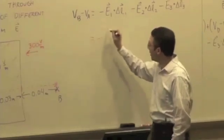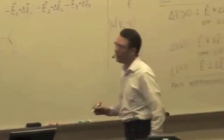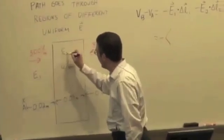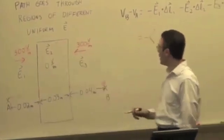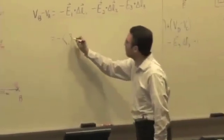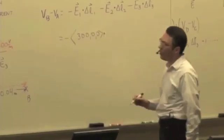So negative. How would I write E1 as a vector? 300 x-hat. How would I write delta L1 as a vector?